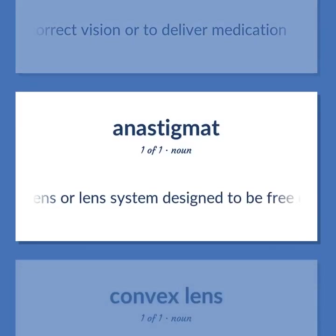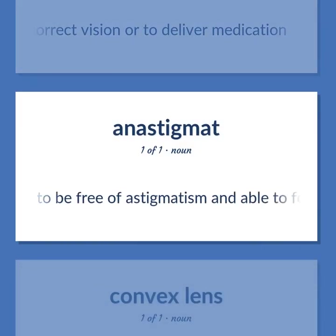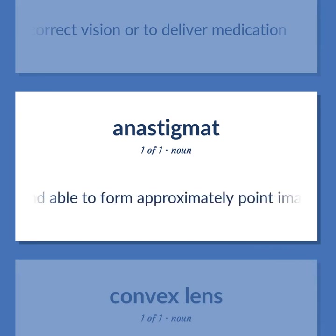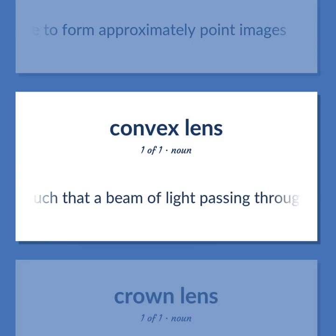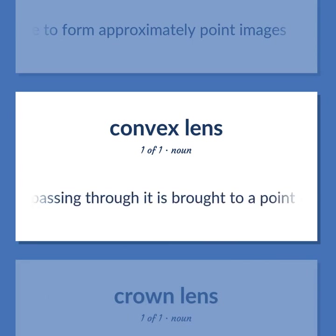Lens types: anastigmat — a compound lens or lens system designed to be free of astigmatism and able to form approximately point images. Also: converging lens — a lens such that a beam of light passing through it is brought to a point or focus.